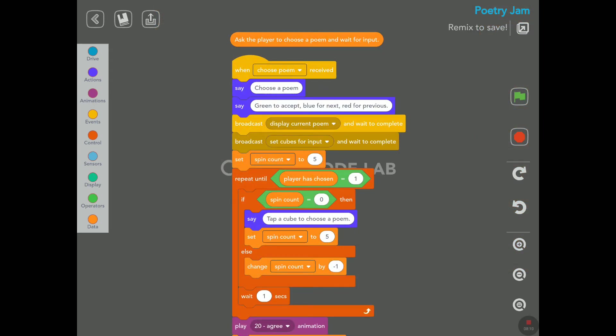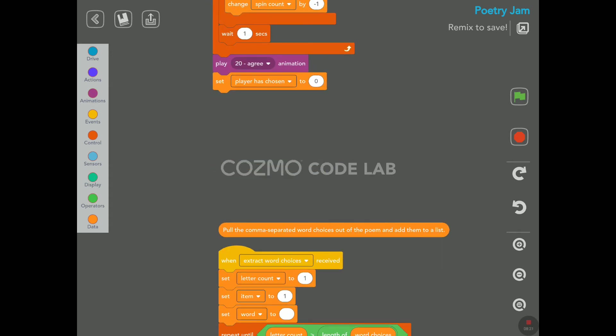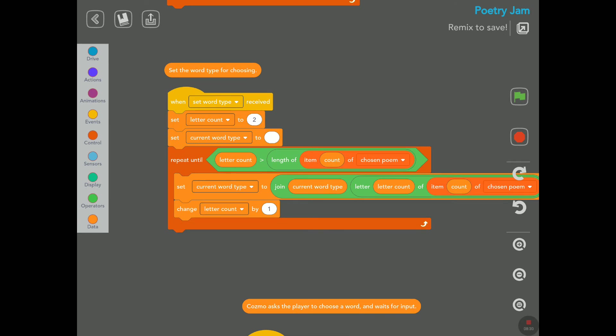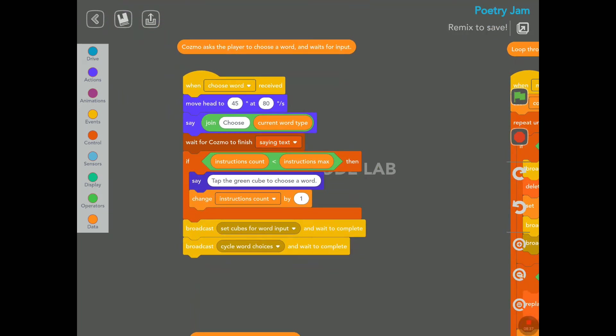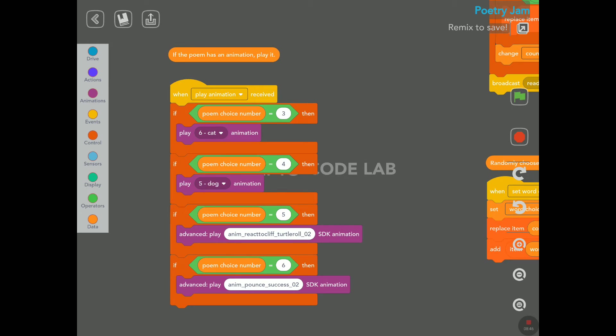Here we have ask the player to choose a poem and wait for input. So Cosmo said that: Choose a poem, green to accept, blue for next and red for previous. So yeah, we got that. Pull the comma separated word choices out of the poem and add them to the list. Set the word type for choosing. Like we heard Cosmo say adjective, he said also a verb. Cosmo asks the player to choose a verb. Cosmo asks the player to choose a word and waits for input.